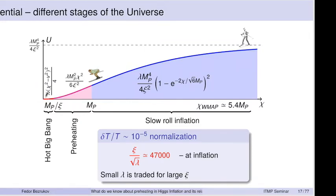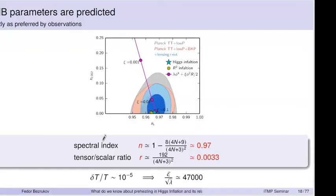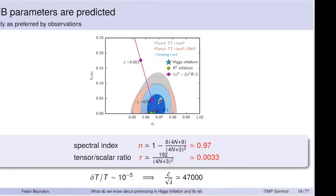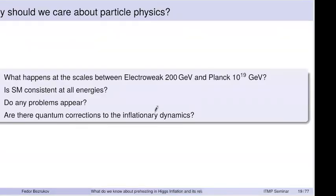All the inflation machinery developed for usual inflation can now be used. At small values of the field it's a quartic potential; at large values the potential becomes exponentially flat and goes to a constant — a concave, very flat potential. Instead of requiring small λ, one can require a large ξ and get inflation. Once ξ is fixed, the prediction lands very specifically in the range of parameters expected from inflation — the spectral index n_s and tensor-to-scalar ratio r give an excellent point on the observational plot.